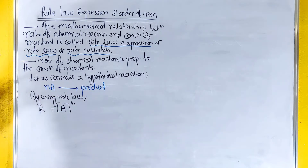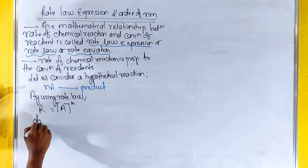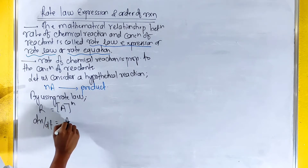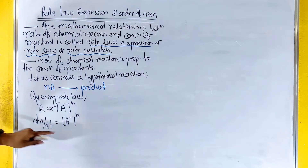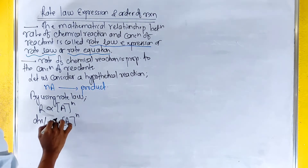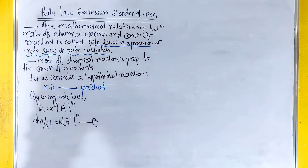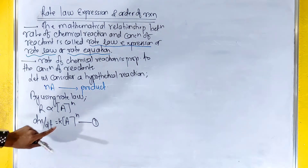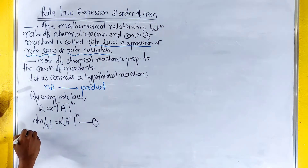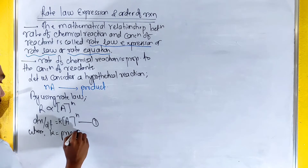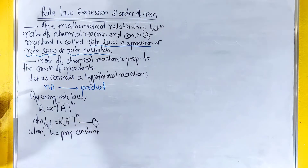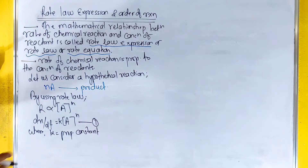Applying rate law: rate equals dx/dt, which is proportional to concentration raised to power n. Introducing the proportionality constant, we get rate equals k times concentration to the power n. Where k is the proportionality constant, called the rate constant.